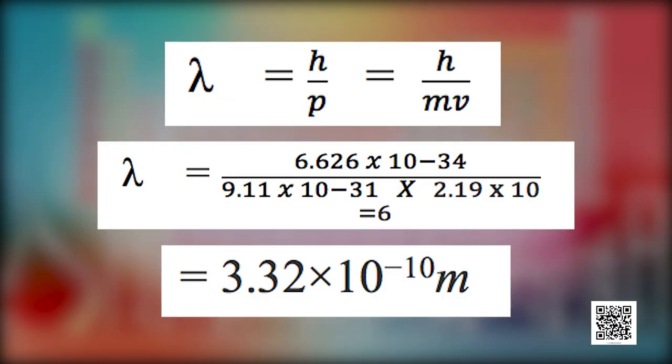The wavelength associated with electrons and other subatomic particles with very small mass can, however, be detected experimentally. The value of lambda can be found by substituting various values into the de Broglie equation.